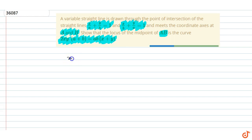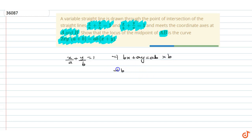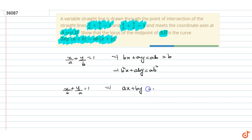The lines given are: x/a + y/b = 1, that is bx + ay = ab. Multiplying by b gives b²x + ab·y = ab². The other line is x/b + y/a = 1, that is ax + by = ab. Multiplying by a gives a²x + ab·y = a²b.